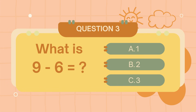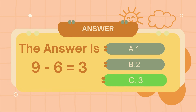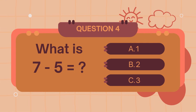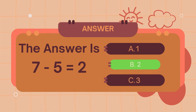What is 9 minus 6? The answer is 3. What is 7 minus 5? The answer is 2.